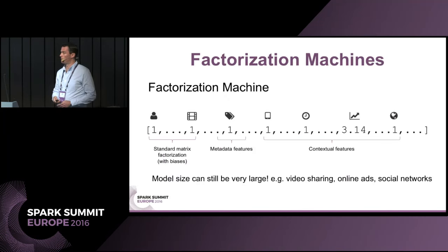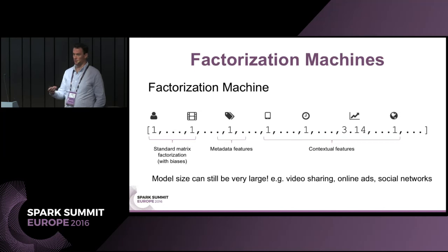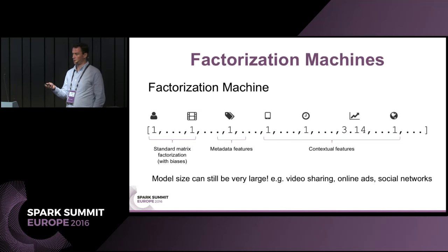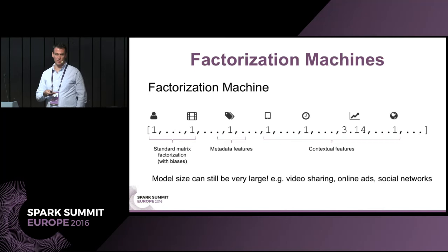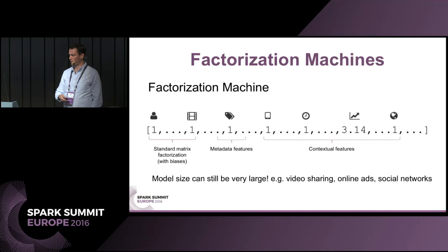We're still left with a scaling problem. Even in a moderately sized problem we might have hundreds of millions of dimensions — many users in social networks, online advertising with many ads and advertisers. We want K in the tens to hundreds to accurately capture feature interaction information. With 100 million dimensions and K of 64, we have a 50 gigabyte model. We may also have hundreds of millions to billions of training examples, so we want to train in a distributed manner.